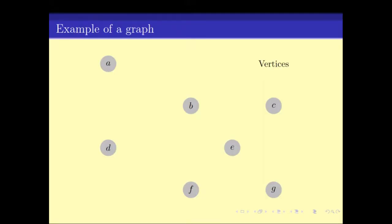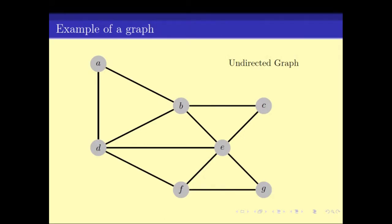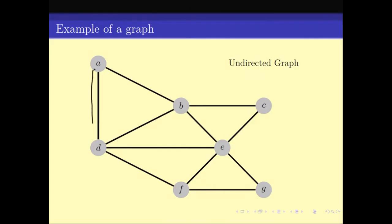Visually, we usually denote graphs using blocks and lines joining the blocks. These blocks are what we call vertices. Here we have vertices A, B, C, D, E, F, and G, and the edges are denoted with a line. If I have an edge like this, it means A-D is a pair because there is a line here. Similarly, A-B is a pair in the edge set. Since there is no edge between A and C, A-C is not in the edge set.